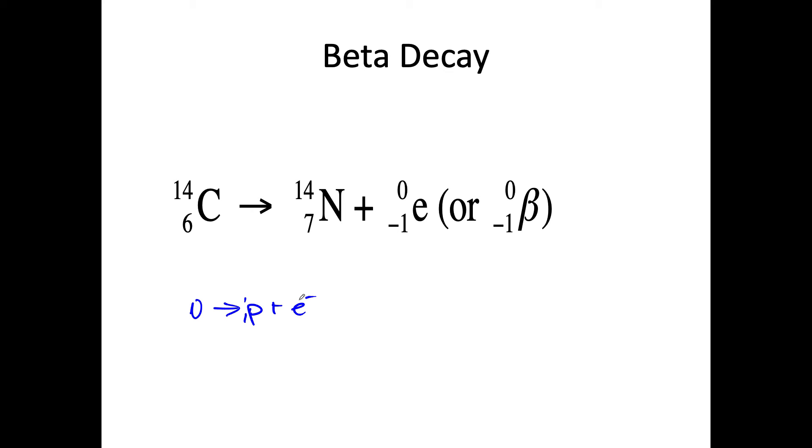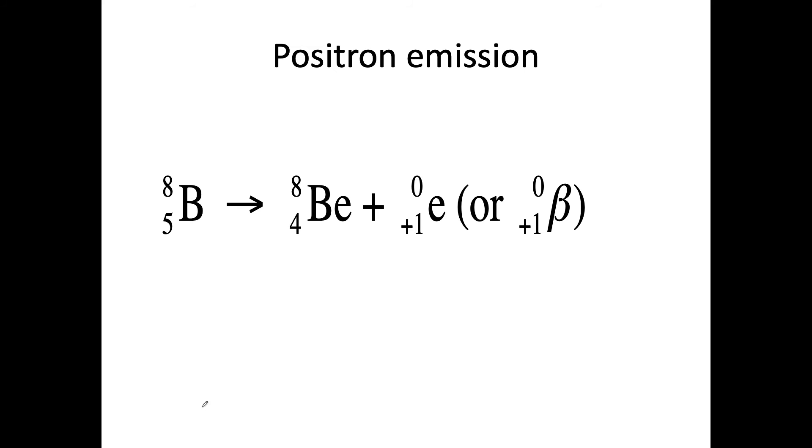Again, neutron gives to be a proton plus an electron. And we go from carbon-14 to nitrogen-14. At this point, at this time in your career in chemistry, we're not going to worry about where the electron goes or how we gain another electron for it to become nitrogen instead of carbon.